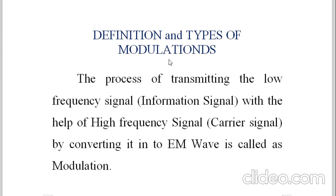Normally, for effective transmission of electromagnetic waves, the size of antenna required is equal to the wavelength of the electromagnetic waves. But information signal is always a low frequency signal. Therefore, the size of antenna, which is equal to the wavelength of the information signal converted into electromagnetic waves, goes into kilometers.